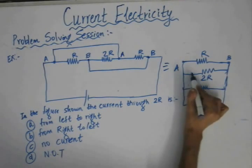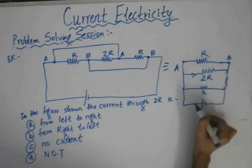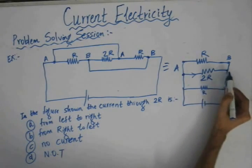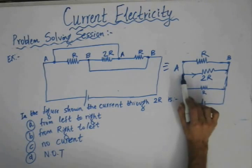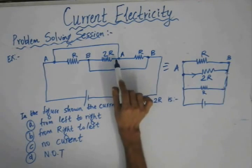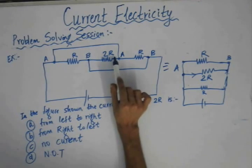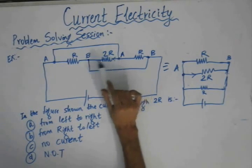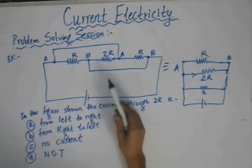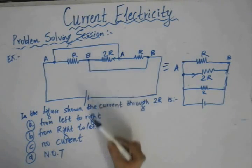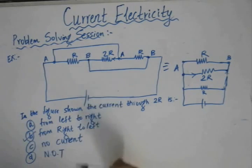For the 2R resistor, the direction of current flow is from the high potential end A to the low potential end B. In the original diagram, the current in the 2R branch flows from A to B, which corresponds to from right to left. So the correct option is from right to left.